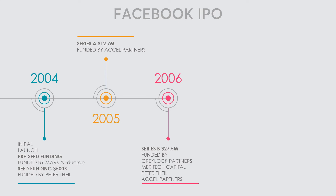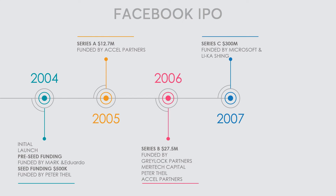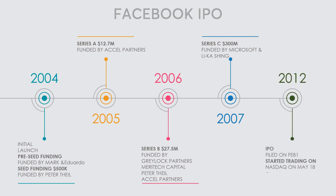In April of 2006, Facebook closed its Series B funding, which included 27.5 million dollars from a number of venture capitalists including Greylock Partners and Meritech Capital. 2007 marked the entry of Microsoft with Series C funding of 240 million dollars, and in the same year Hong Kong billionaire Li Ka-shing invested 60 million dollars as well. At that time, Facebook did not go for Series D funding; instead, it filed for an IPO on February 1st, 2012.